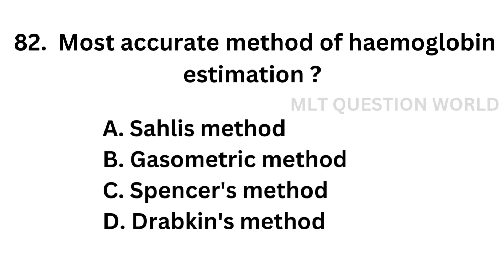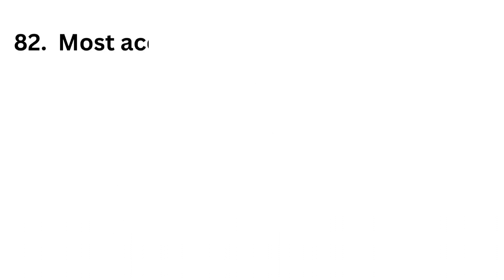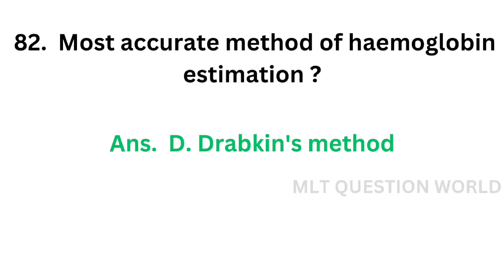Question number 82: Most accurate method for hemoglobin estimation — Option A: Sahli's method, Option B: Gasometric method, Option C: Spencer's method, Option D: Drabkin's method. The correct answer is Option D, Drabkin's method. Drabkin's method is the most accurate method of hemoglobin estimation.